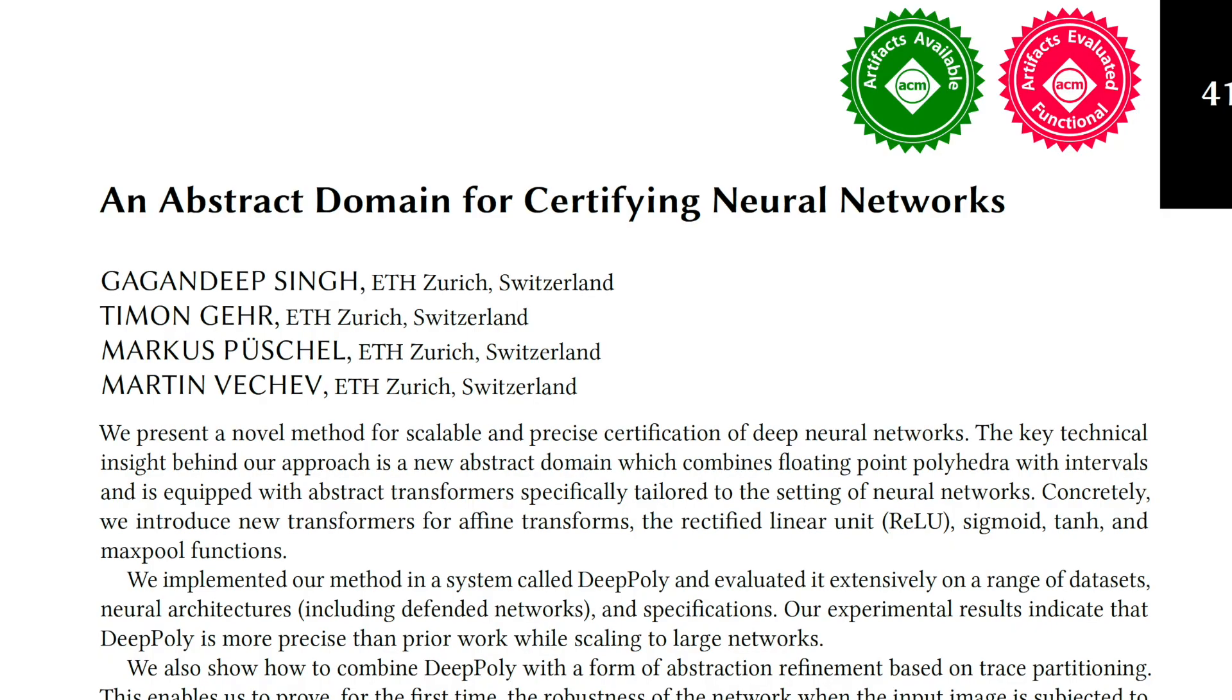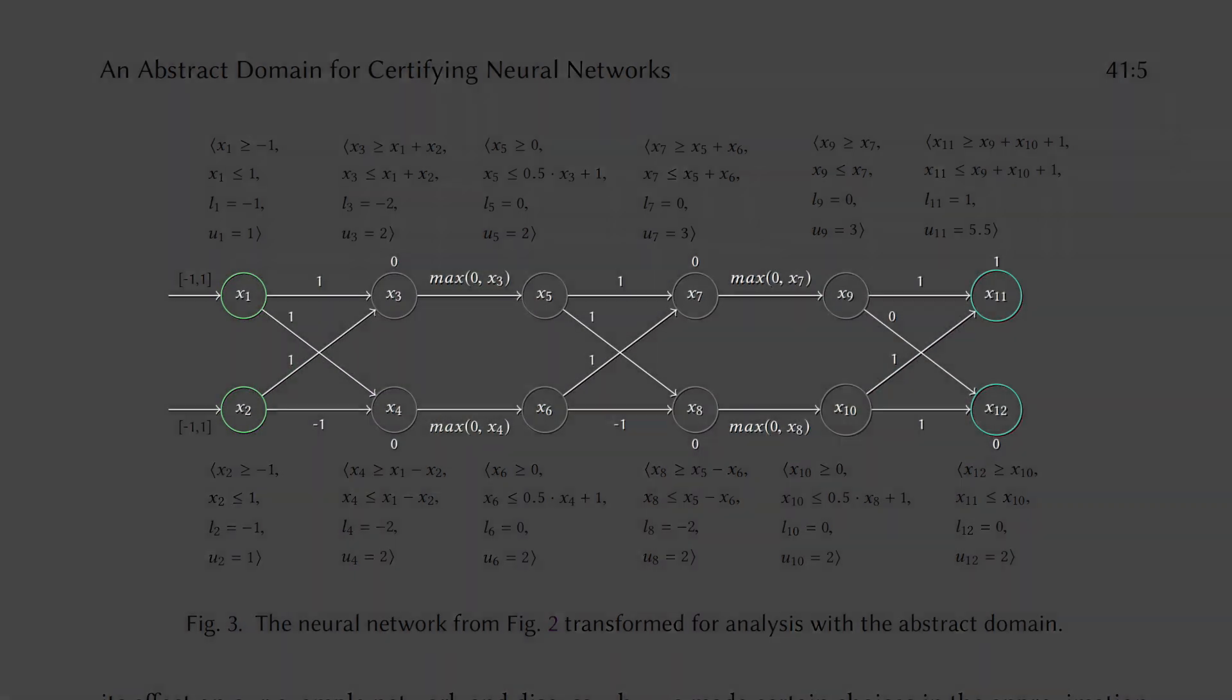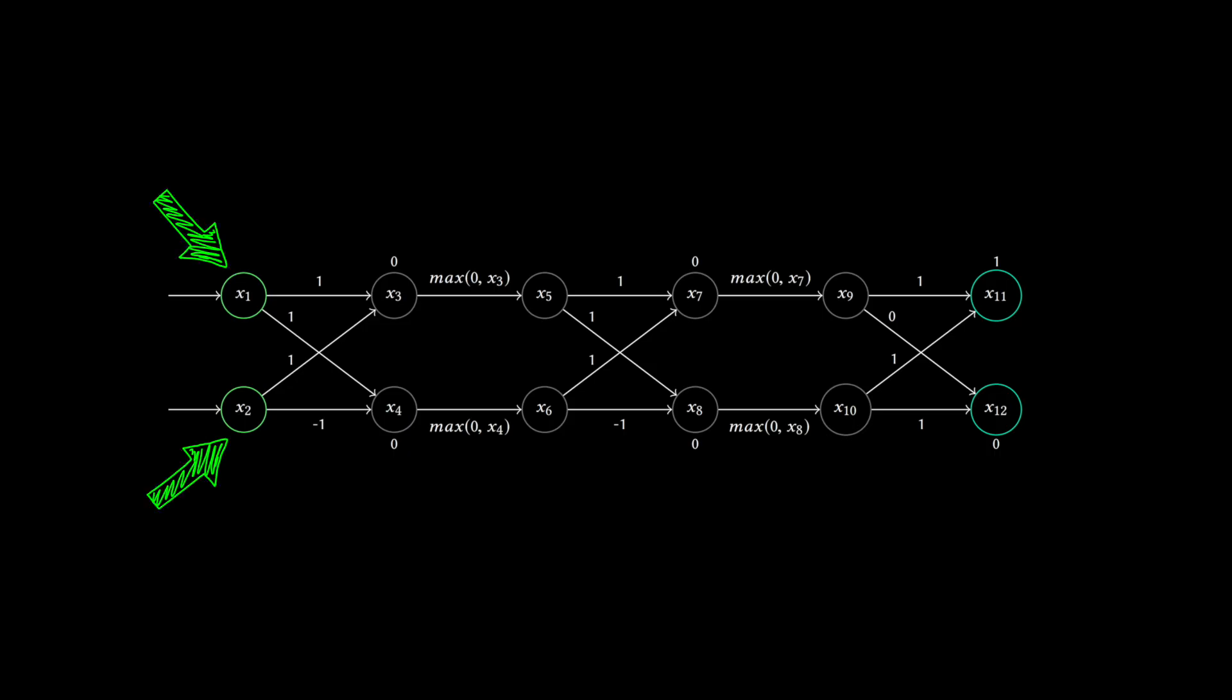To keep this explanation simple, let's look at a toy neural network, one proposed by the DeepPoly team at ETH Zurich. This network has two inputs, x1 and x2, and we can think of them as two pixels or two data points. So those two inputs pass through a fully connected layer with weights of one, one, one, and minus one, and biases of zero and zero. And then they go through a ReLU activation where positive values are passed through and negative values are clipped at zero. Then there's another fully connected layer, another ReLU, and then finally one more fully connected layer to get the outputs.